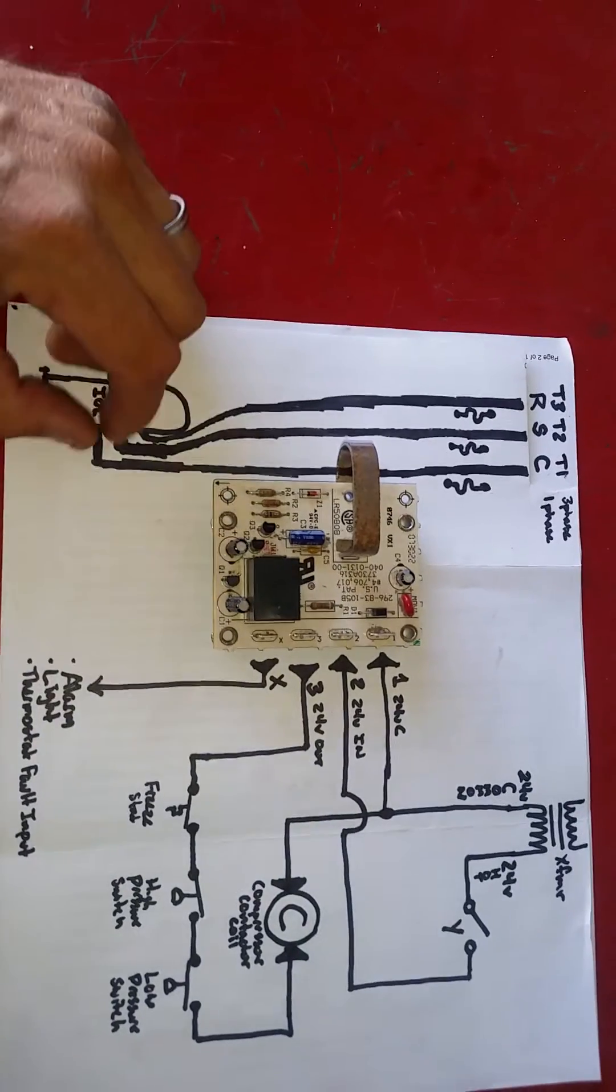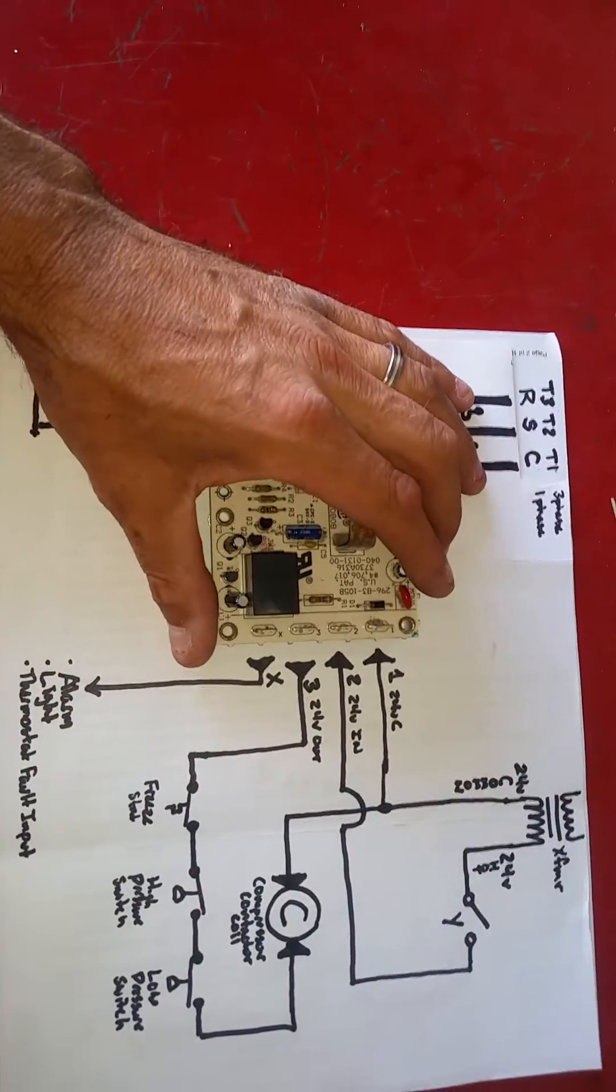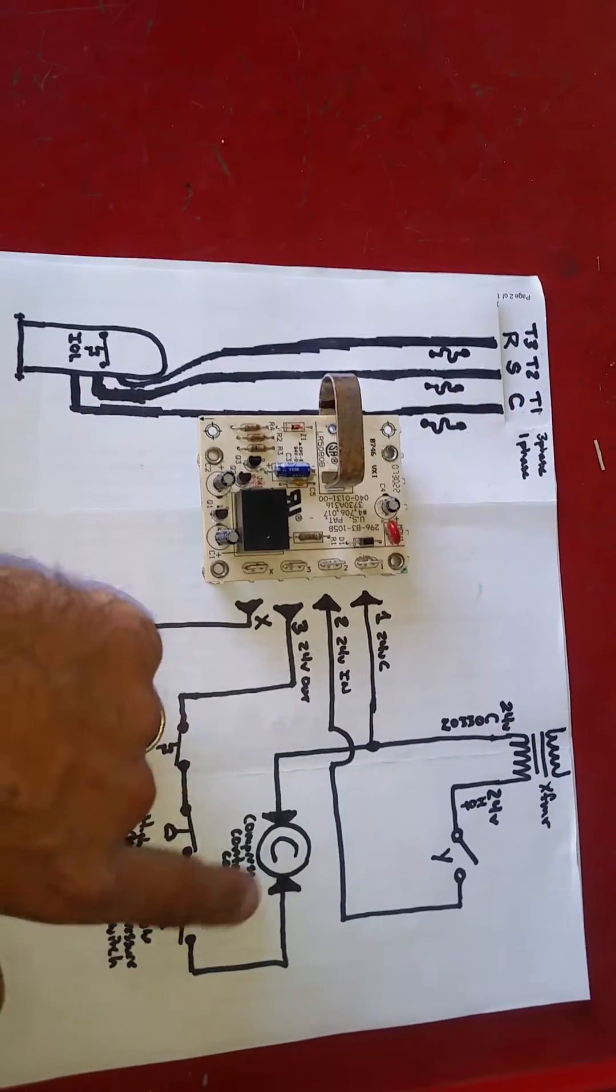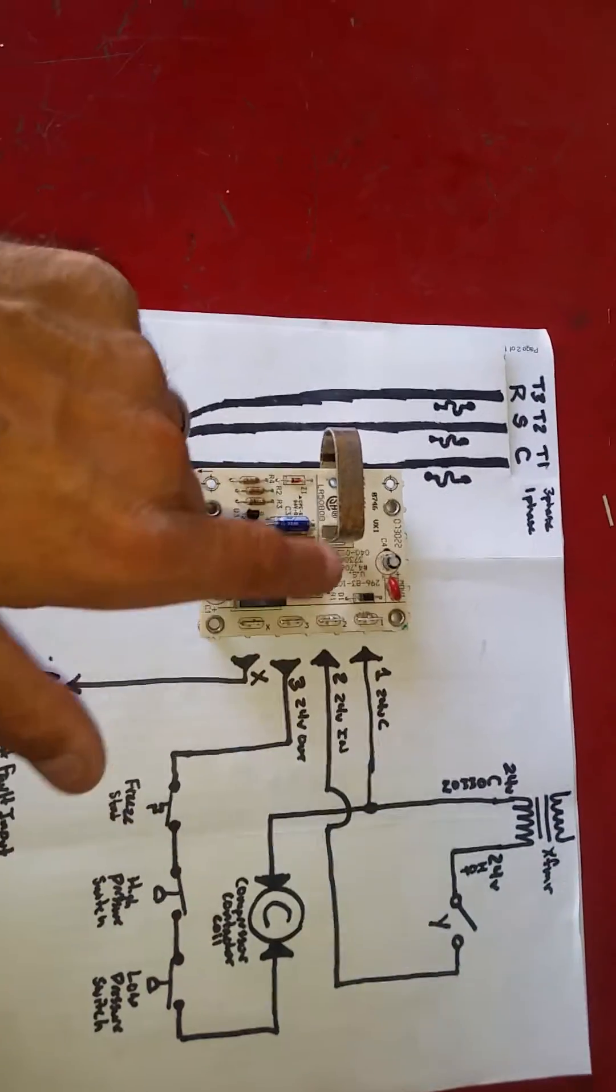If the internal overload opens, compressor shuts down, no current, lockout condition. I think there's a misconception that there's a safety loop to this. There's not.